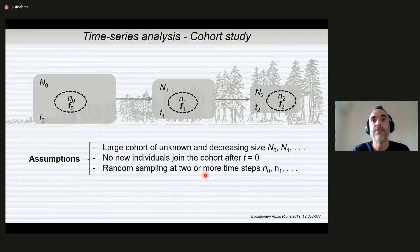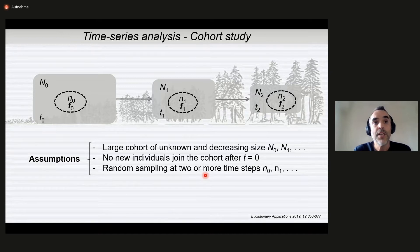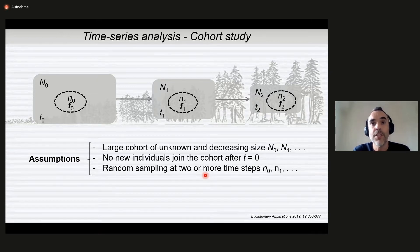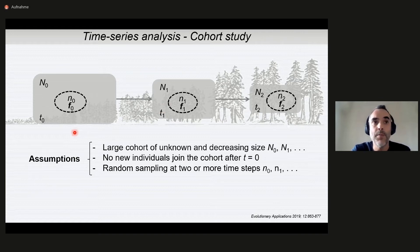So this is our demographic model. We have a large cohort of unknown and decreasing size. We need mortality to exist, otherwise there is no viability selection. We assume that there are no new individuals joining the cohort after the initial time step, or if there are, we can discriminate them and exclude them from the samples. We assume that we don't sample exhaustively the cohort. Think of a large cohort of siblings or of fishes or whatever. We take relatively small random samples at each time step.